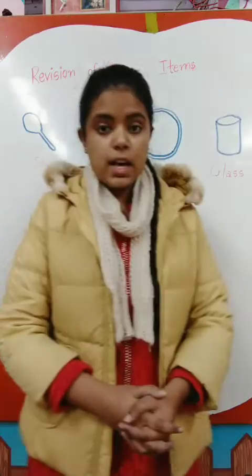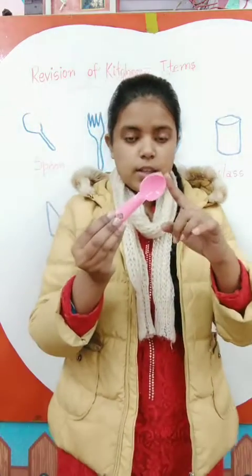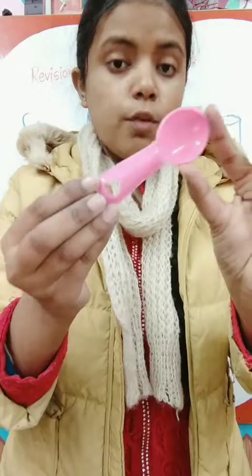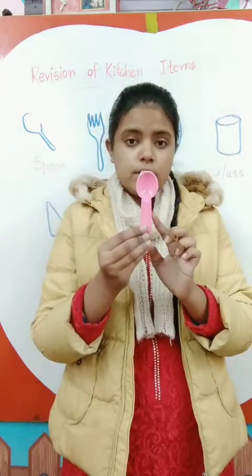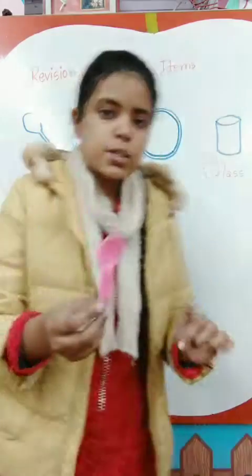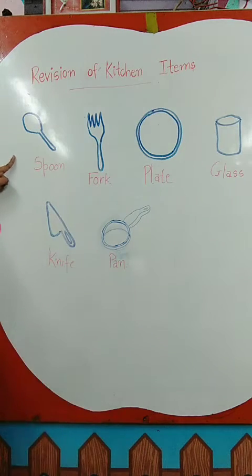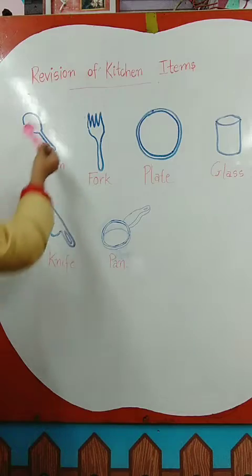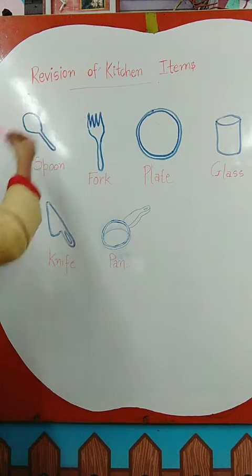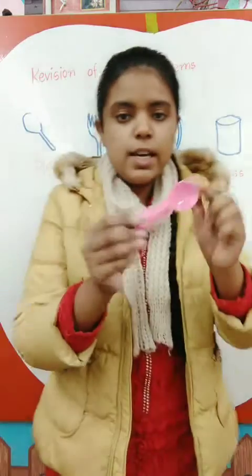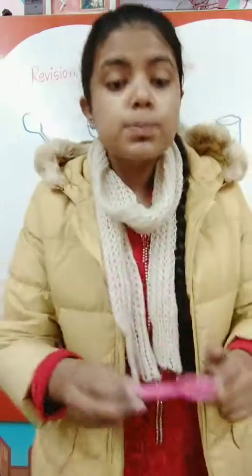Children, now we are going to revise our kitchen items. So, can you tell me what is this? Yes, this is a spoon. Can you all see a spoon here? This is also a spoon and this is also a spoon.